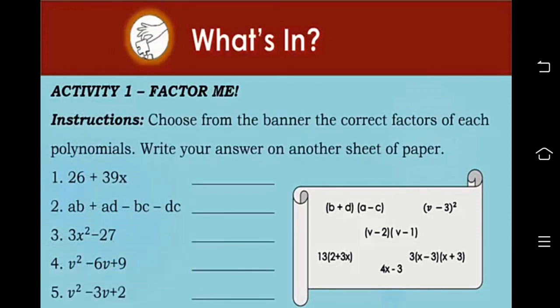For number 2, this can be answered using the common monomial factor. For number 3, you divide both terms by 3 first, and then what's left would be the difference of two squares. For number 4, this will be a perfect square trinomial. For number 5, this will be a general trinomial where A is equal to 1. You can check out my other videos for this — these are the first six lessons in this playlist, and I will put the links in the description box below.